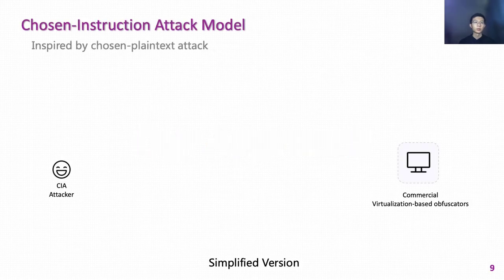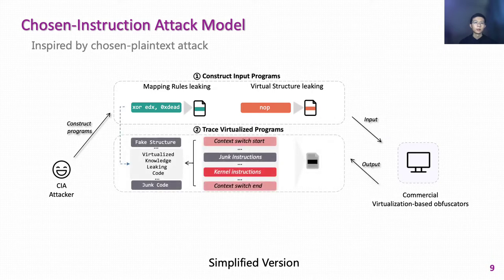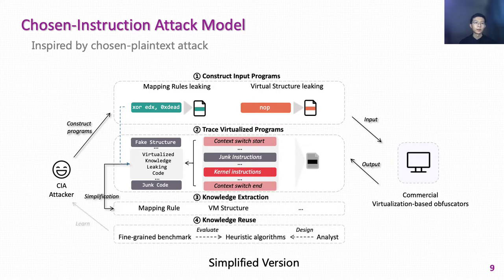Our Chosen Instruction Attack model is inspired by the chosen plaintext attack, a cryptanalysis model. Similarly, CIA attackers do not have to analyze the black box obfuscator — they can learn knowledge from virtualized programs. Attackers construct special programs as inputs for obfuscators, inserting different kinds of knowledge-leaking code. Then they obtain corresponding virtualized programs from the obfuscator. After analyzing the virtualized knowledge-leaking code, they can learn and reuse extracted knowledge, such as mapping rules.